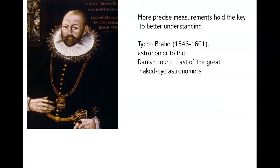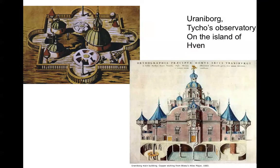To get from the Copernican model to a more correct view of the solar system, we needed better measurements that could actually be used to test ideas about how things worked. This came about just after Copernicus' death, when Tycho Brahe, an astronomer at the Danish court, made very precise measurements over many years of the positions of the planets against the distant background stars. He could be considered the last of the great naked-eye astronomers, since his measurements were made just before the invention of the telescope. The King of Denmark provided Tycho with an observatory on the island of Venn, which sits in the Baltic Sea — an observatory called Uranenburg, seen here in these illustrations.